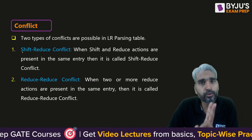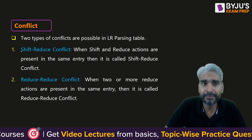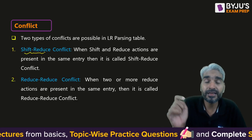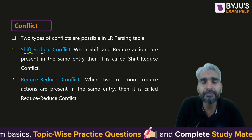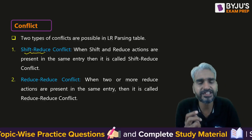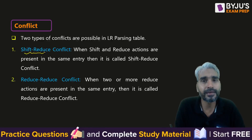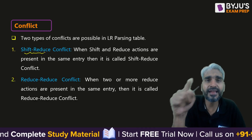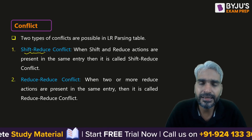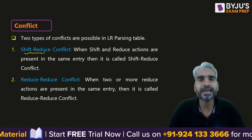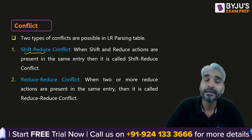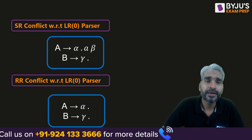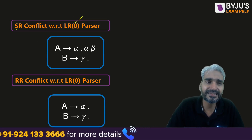Now there are two types of conflicts possible in the LR parsing table. The first is SR conflict: if in any entry of the LR parsing table shift and reduce actions are present together, then it is a shift-reduce conflict. Similarly, if in any entry of the LR parsing table two or more reduce actions are present at the same time, then it is called a reduce-reduce conflict, or RR conflict.